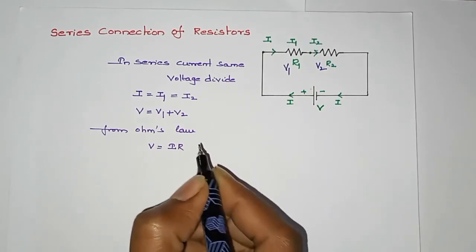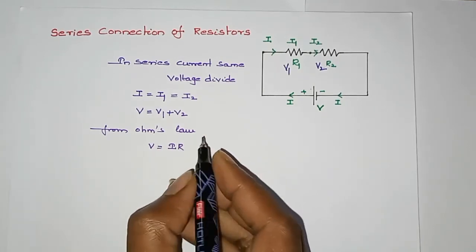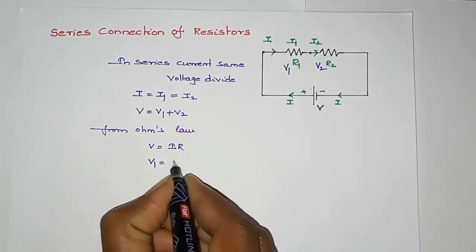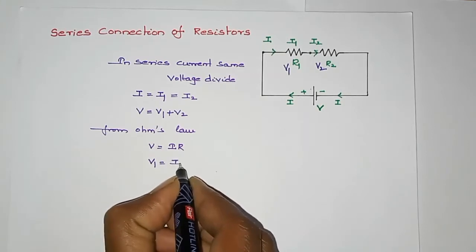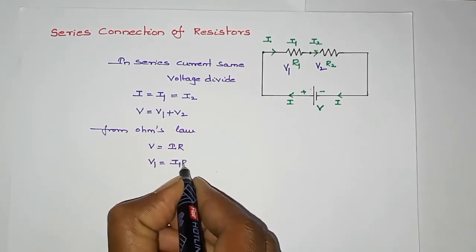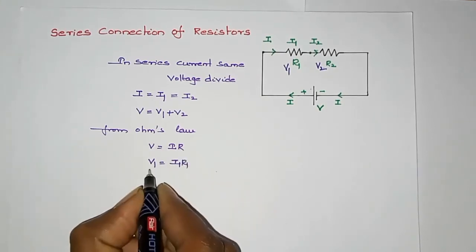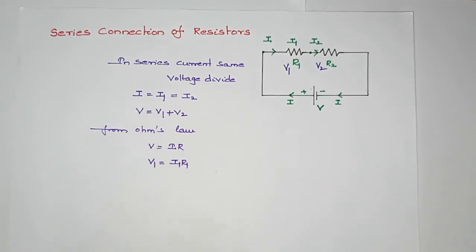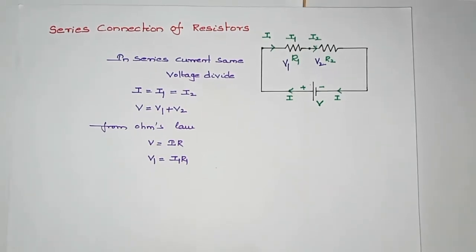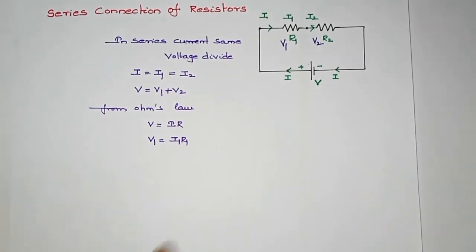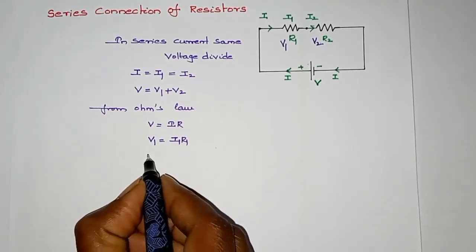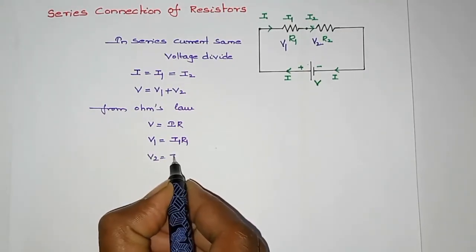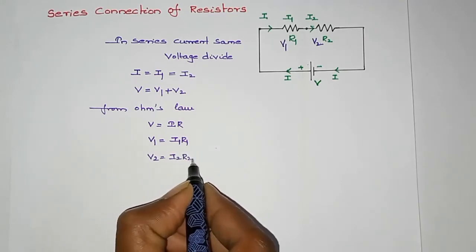I will show this relation to the value of V1 voltage. V1 is the voltage drop across R1. V2 is the voltage drop across R2.